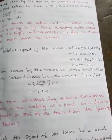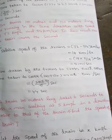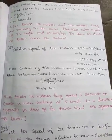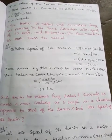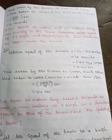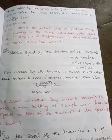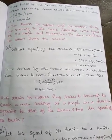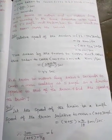Converting to meter per second: 18 into 5 by 18 — the 18s cancel — remaining value is 5, so 5 meter per second. Time taken by the trains to cross each other equals time taken to cover 100 plus 120 meters at 5 meters per second, equal to 220 divided by 5 seconds, equal to 44 seconds.